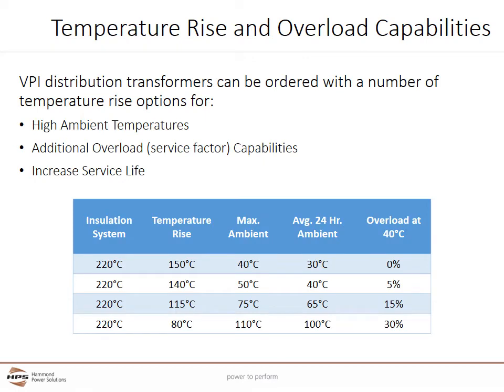This chart shows the various temperature rise options with VPI transformers. VPI transformers have the broadest options for dealing with high ambient temperatures and offering several overload options. Adding low temperature rise options will also allow the transformer to run cooler over its lifetime and increase its service life. VPI transformers offer continuous overloads of up to 30% and can deal with ambient temperatures over 100°C.